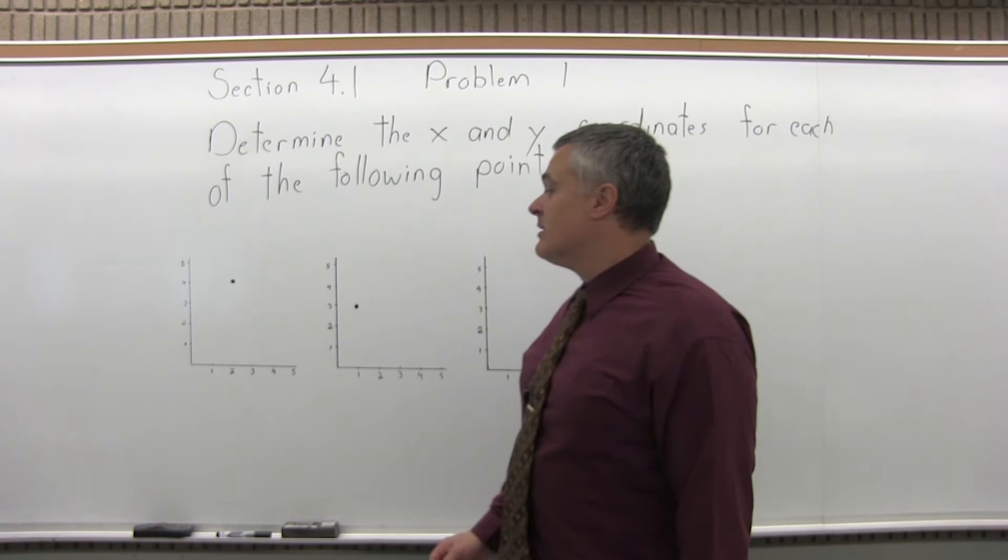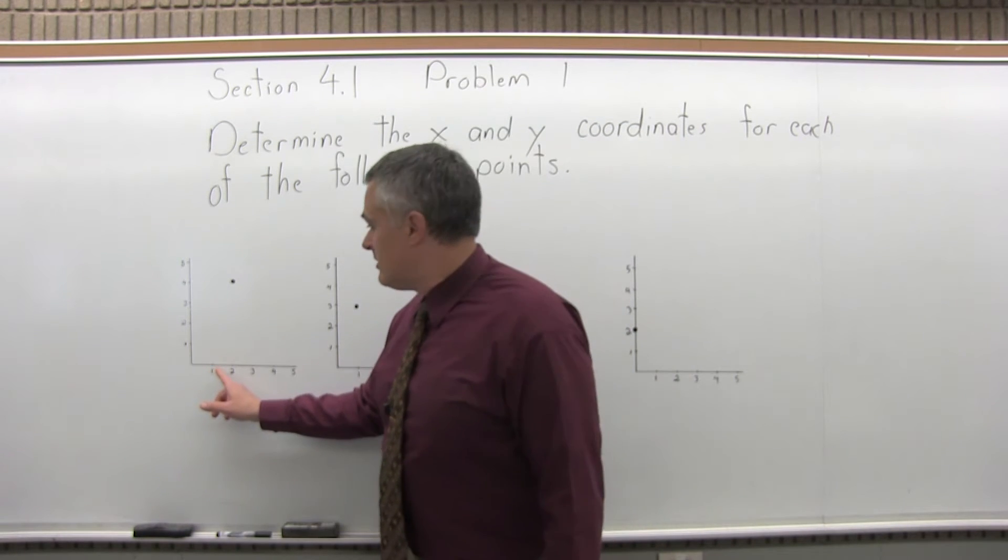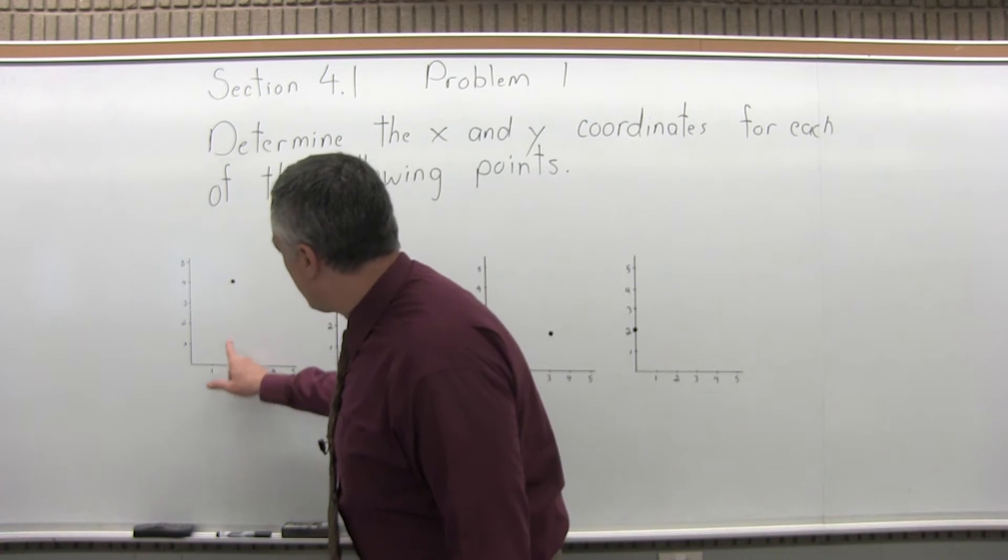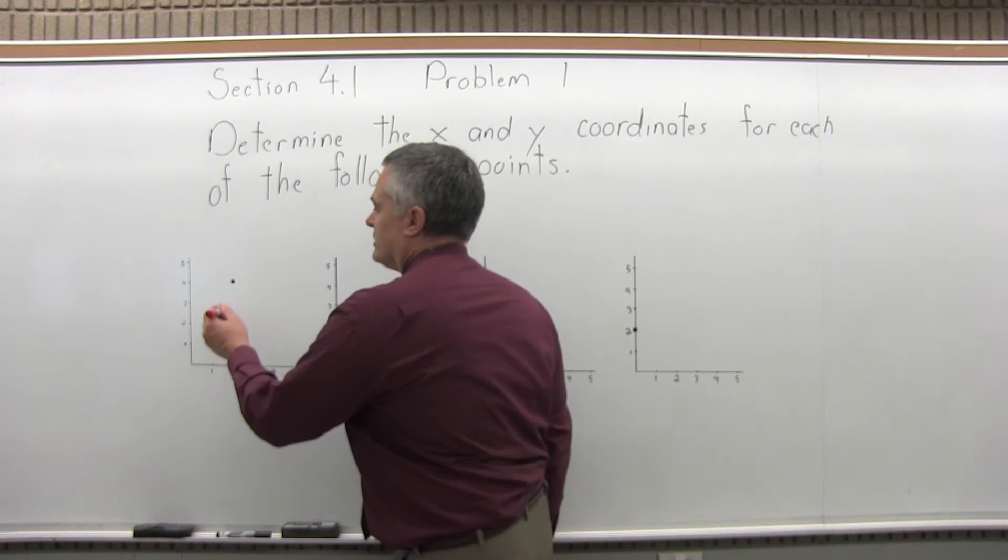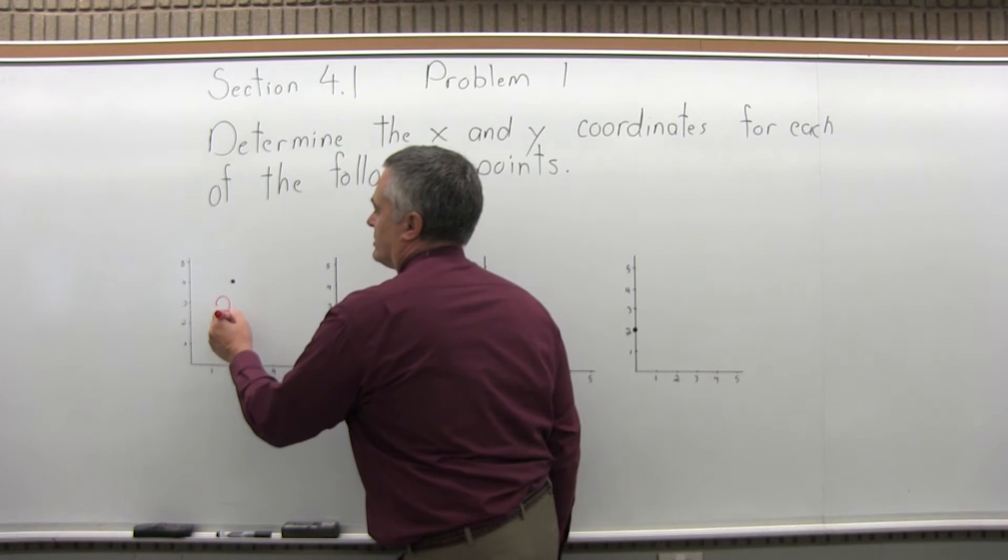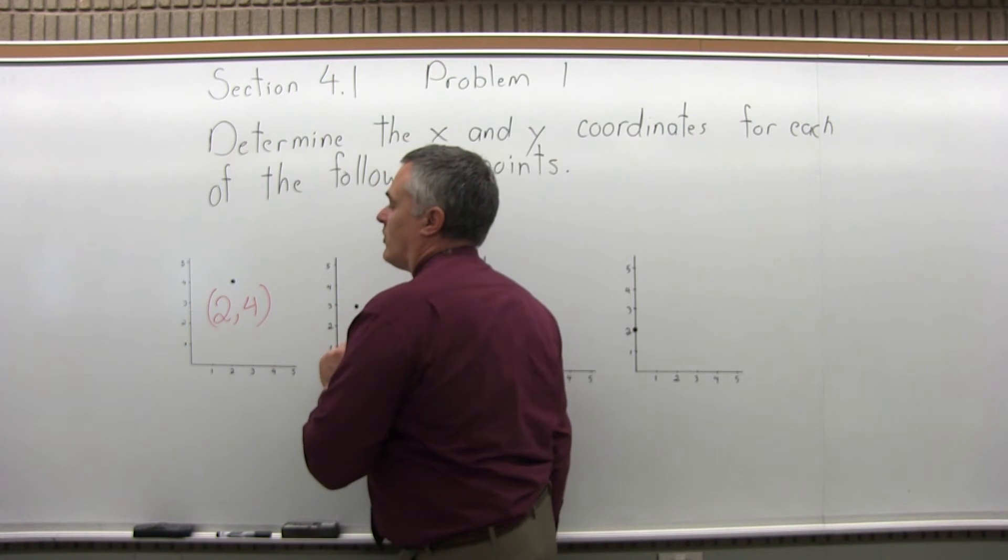The first point, what you want to do is first how far over you go. If you look, it seems that we're over 2 and up 4. So this point has the coordinates 2 comma 4, over 2 and up 4.